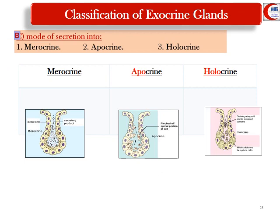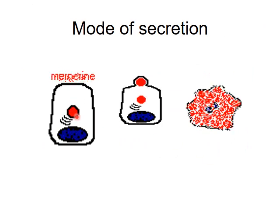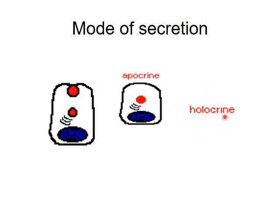The modes of secretion are: merocrine — secretion accumulated in vesicles released by exocytosis from the apical membrane, used by most sweat glands; apocrine — the apical part of the cell containing the secretion is released, causing loss of the apical portion, as in the mammary gland; and holocrine — the whole cell is lost with the secretion, as in the sebaceous gland.